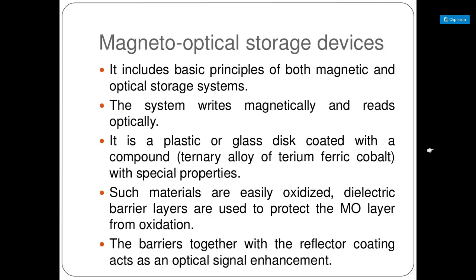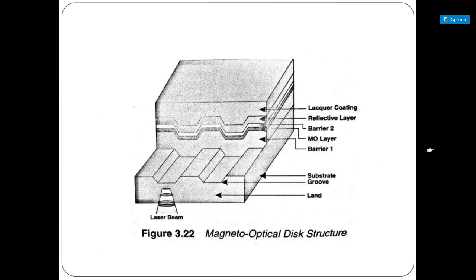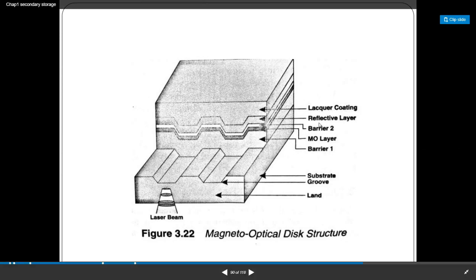The barrier layers together with the reflective coating act as an optical signal enhancement. When an optical signal falls on the disk, it enhances the reading — whatever information is stored is enhanced and the binary values stored can be easily read. This is what the layers look like: there is a lacquer coating, a reflective layer, barrier 2, the MO layer, and barrier 1.